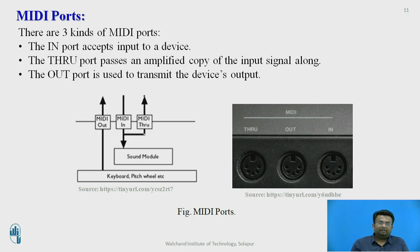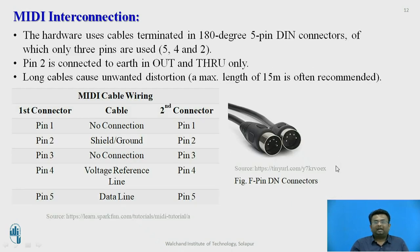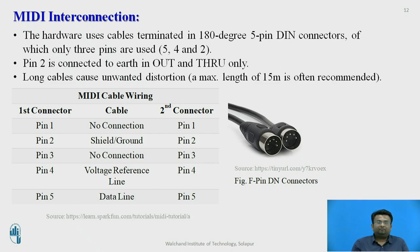The MIDI port uses three ports: In, Out, and Through. The In port is used to accept input to the device. The Through port is used to amplify the copied input signal. The Out port is used to transmit the device output. It uses pins as shown in the figure — this is a 5-pin connector in which pin numbers 2, 4, and 5 are used. Long cables cause unwanted distortion, so a maximum of 15 meters is recommended for MIDI interconnection.